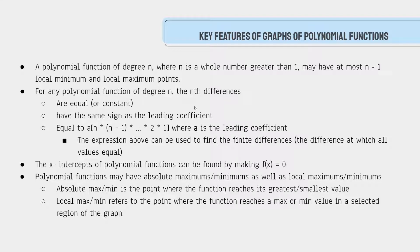Another major point is that the x-intercepts of the polynomial function can be easily found by making f of x equal to 0, which you should know from last year. And finally, polynomial functions may have absolute maximums and minimums, as well as local maximums and minimums.